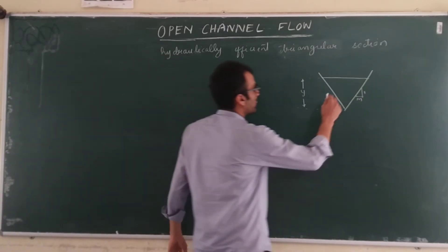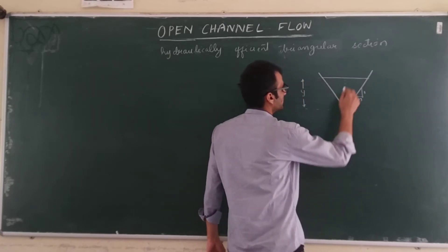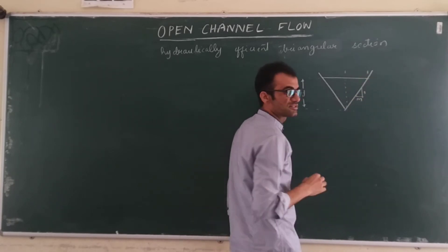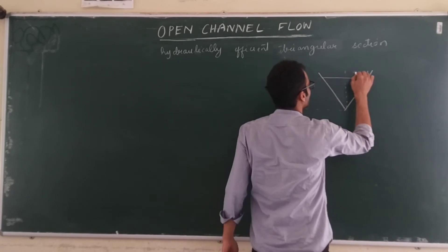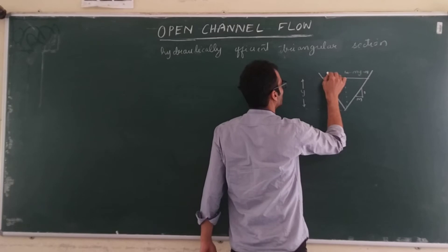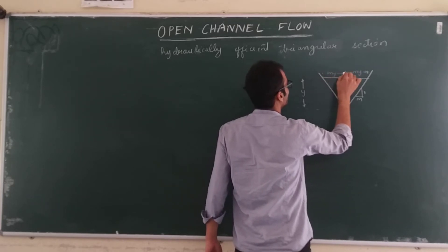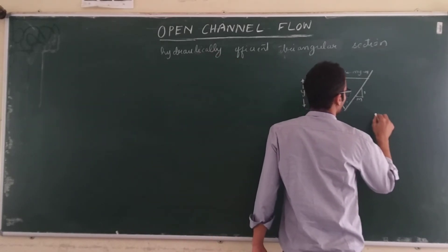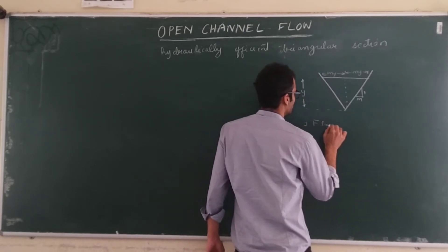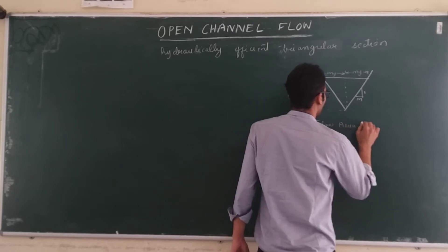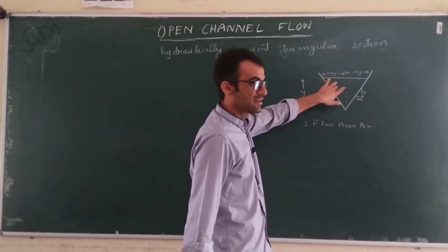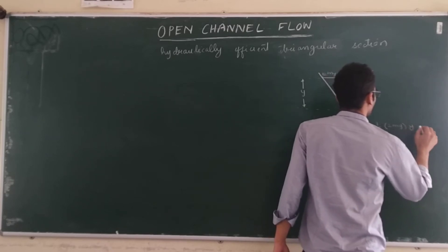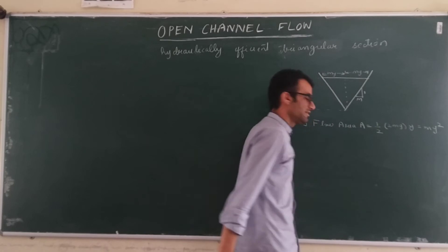We know that if the side slope is 1 vertical to M horizontal, then for Y vertical, the horizontal distance would be MY. Similarly, the other side would also be MY. So the flow area A is the area of this triangle: half base into height. The base is twice MY and the height is Y, so the flow area A = MY².